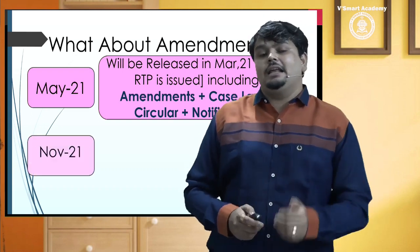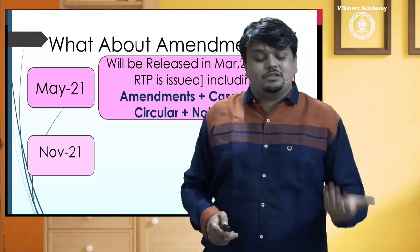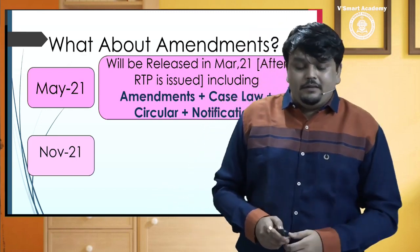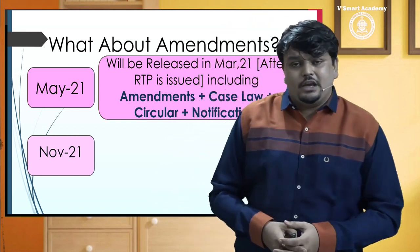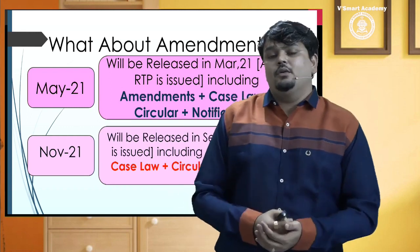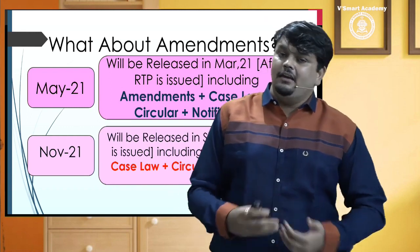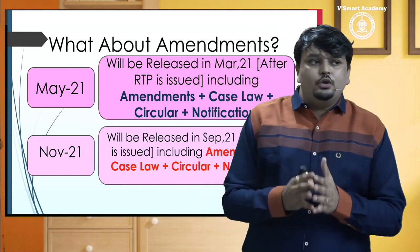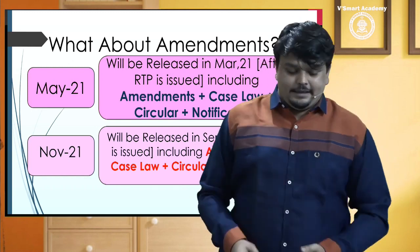Jo bachche November 21 ke liye yeh buy karenge — kyunki COVID-19 ne, hamesha bachcha sochta hai ki main jaldi jaldi prepare kar loon November 21 ke liye — aapko bata doon, six months before exam saare rules and notifications applicable hote hain. Toh November attempt waale logon ke liye hum log September ke andar mein amendment video lekar aayenge, aur aap use dekh sakte hain. Yeh dono bhi amendment videos totally YouTube ke upar available honge, aap wahaan se dekh sakte hain.